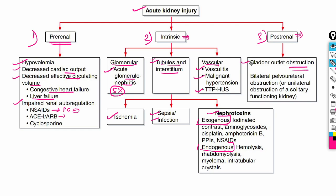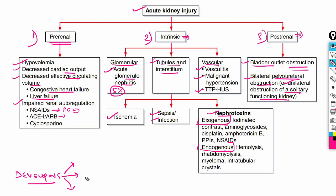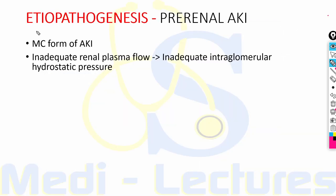Post-renal causes include bladder outlet obstruction, bilateral pelvi-ureteric obstruction, or unilateral obstruction of a solitary functional kidney. Additional causes in developing countries include envenomation by snakes, spiders, caterpillars, and bees; infections like malaria and leptospirosis; and crush injuries leading to rhabdomyolysis, which can occur in earthquakes.